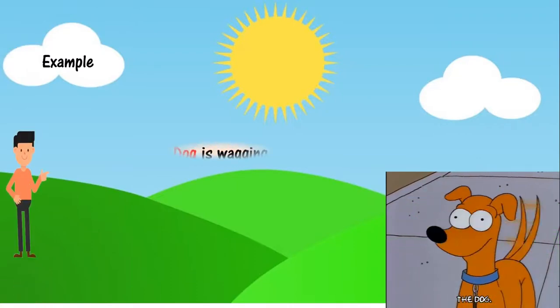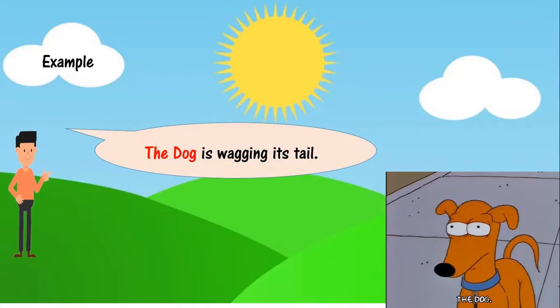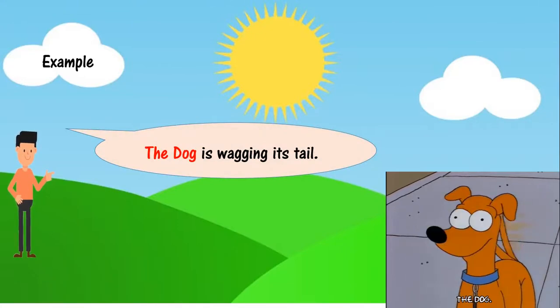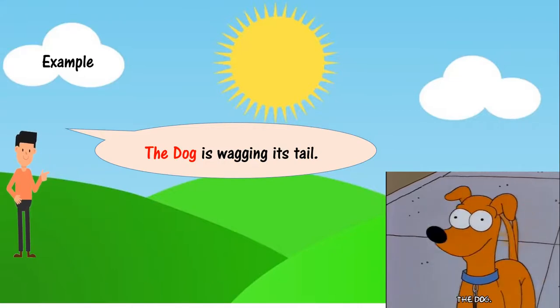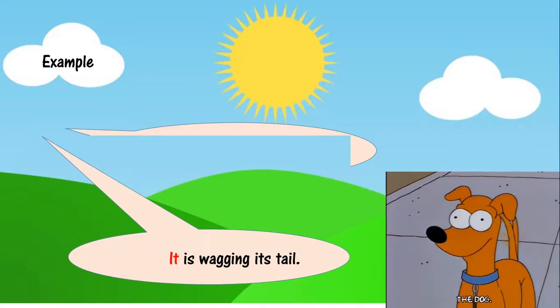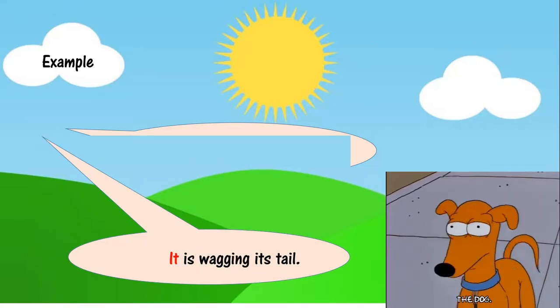Now here the dog is wagging its tail. The dog is the name of the animal, and I can replace this name with the word it. And say it is wagging its tail.